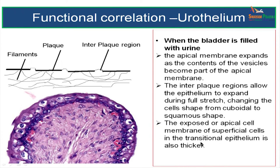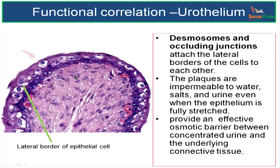When the bladder gets filled with urine, these vesicles or stacks of plasma membrane become part of the apical membrane, and there is extra membrane present which makes the cells squamous in shape. The exposed or apical cell membrane of superficial cells in the transitional epithelium is also thicker. Desmosomes and occluding junctions attach the lateral borders of cells to one another.